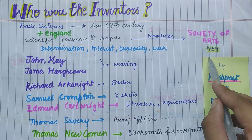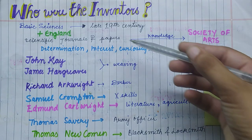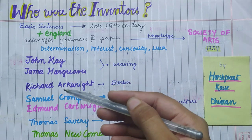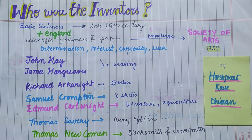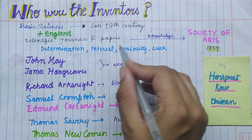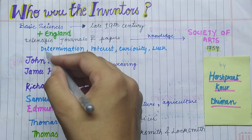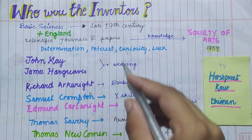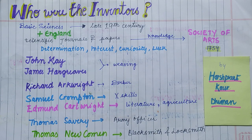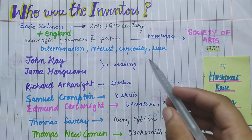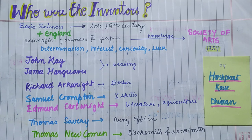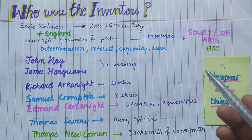The inventors we read about in the last video were mainly driven not by technical knowledge but by determination, interest, curiosity, and luck. If you have less knowledge but you have determination and a desire to do something, you can do it by any means. Curiosity is very important, and for a hard-working person, luck will follow.